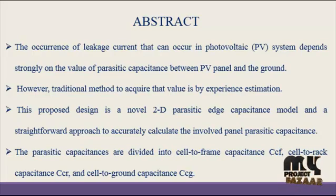The accuracy of leakage current that can occur in photovoltaic system depends strongly on the value of parasitic capacitance between PV panel and the ground. However, the traditional method to acquire that value is by experience estimation.